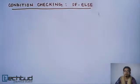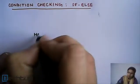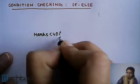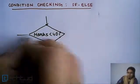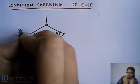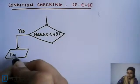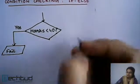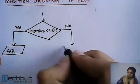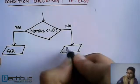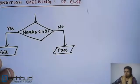Take an example: if you have given an exam and you have gotten marks less than 40, then you have definitely failed in most cases. And if you have gotten greater than or equal to 40, then you are passed.